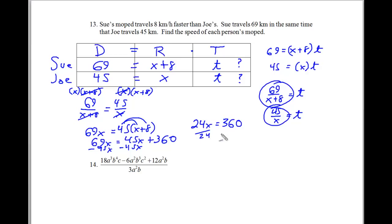Divide both sides by 24. And we get the speed of Joe's moped. And Joe's moped is going to be 15 kilometers per hour. So 360 divided by 24 is 15.